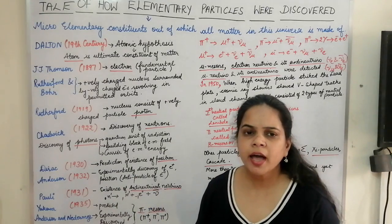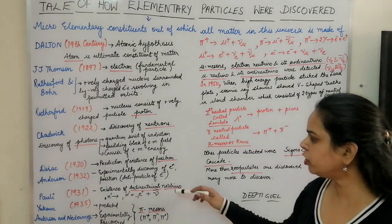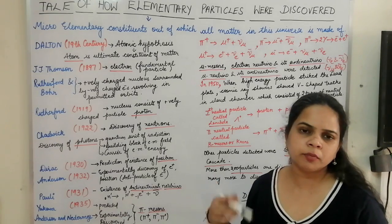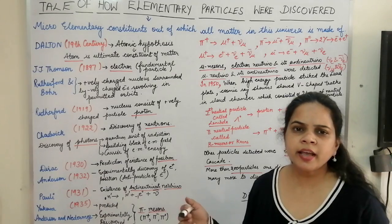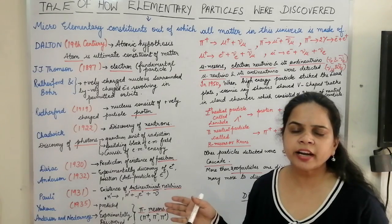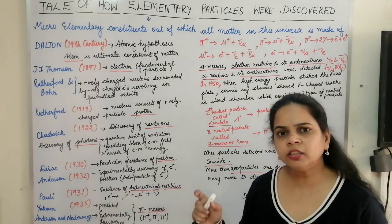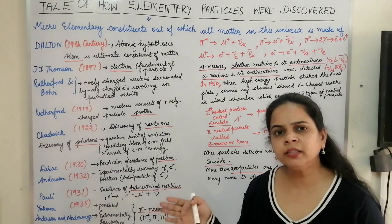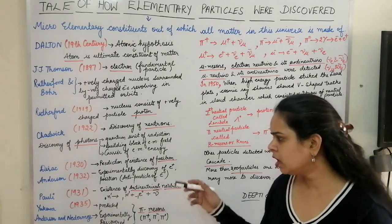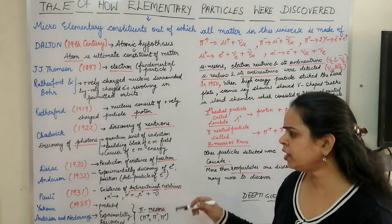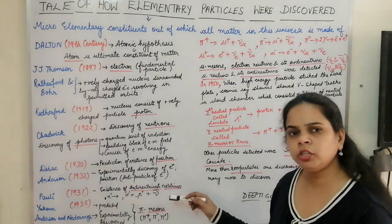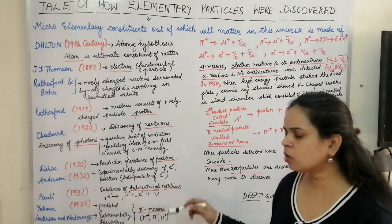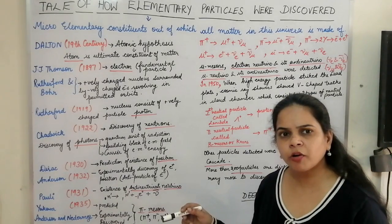Anderson had experimentally verified the theoretically predicted existence of the positron by Dirac. Then in 1931, Pauli also gave the neutrino hypothesis: in beta decay, when a neutron is converted into a proton and an electron, another particle — a neutrino — is also emitted to balance mass conservation and energy conservation. Pauli's 1931 theory gave the framework for the existence of antineutrinos and neutrinos.